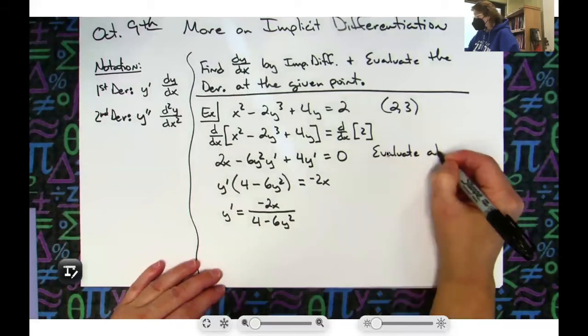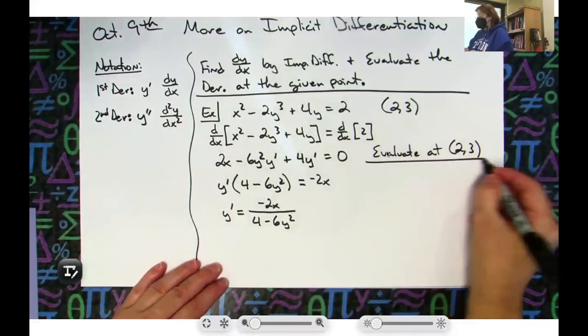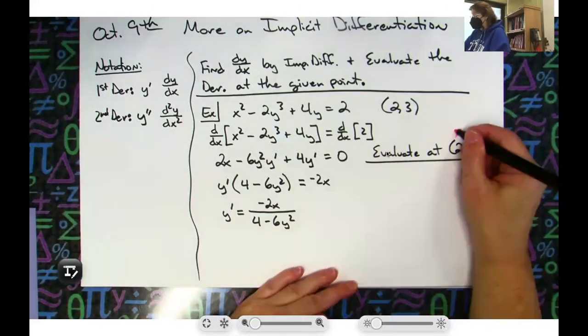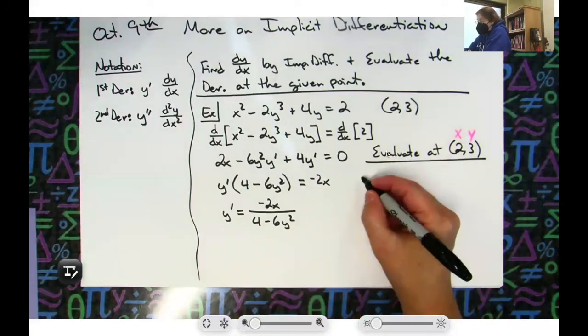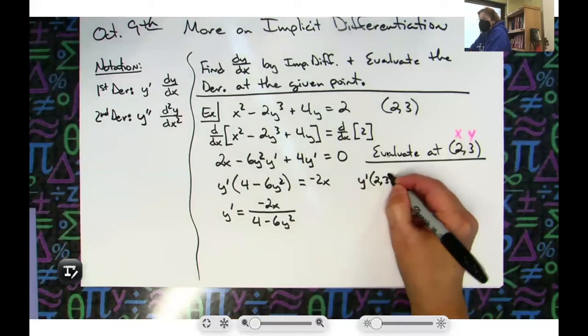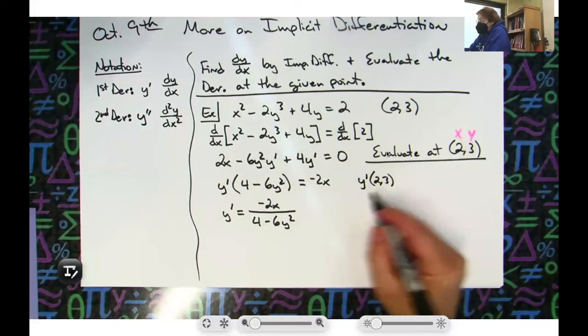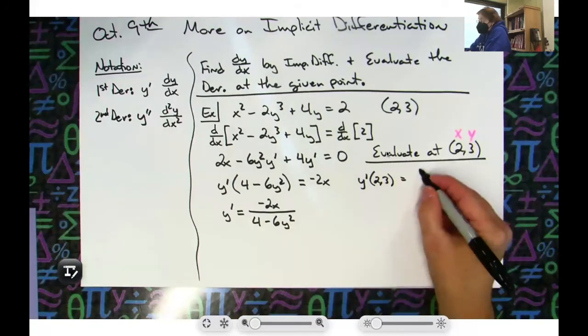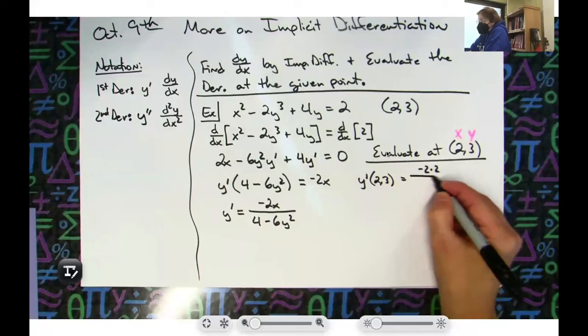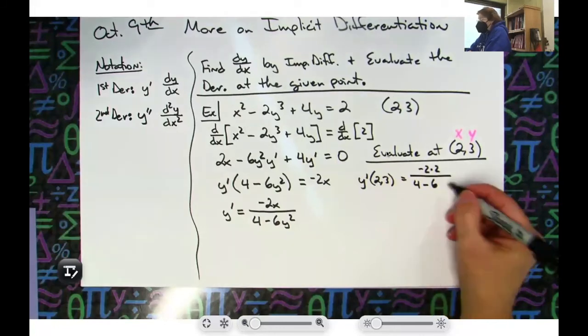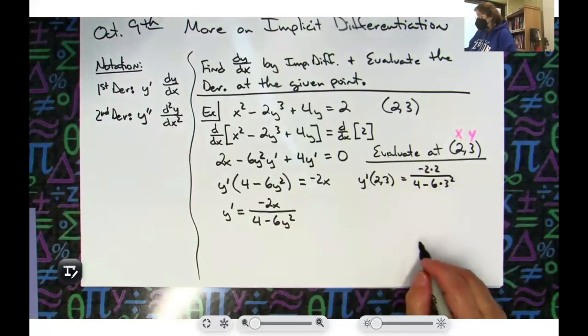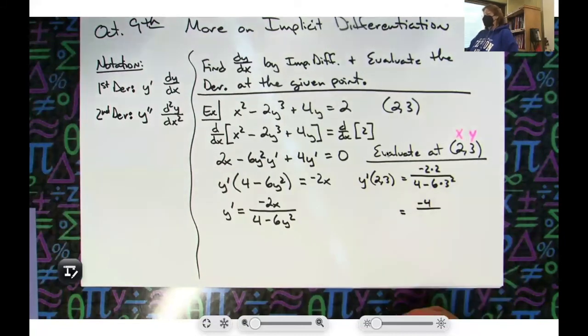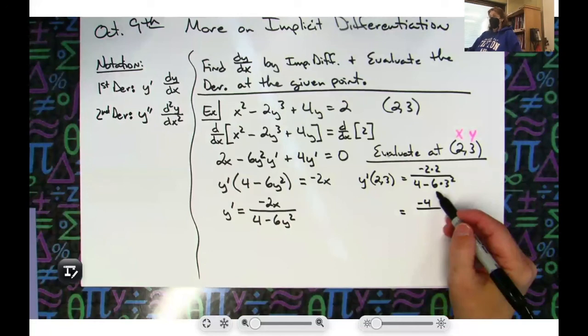When I do that, obviously the 2 is my x coordinate, the 3 is my y coordinate, we know that. So telling the person what you're doing, you need to write that y prime at (2,3) - that's telling you hey I'm taking this point, I'm plugging that into this derivative. Don't let me make an arithmetic mistake - negative 2 times 2 on top, 4 minus 6 times y squared, 3 squared, that'd be a 9 right. So I'm going to have like negative 4 - well that's just going to be really big, 9 times 6 is 54. 4 minus 54, so negative 50, and a negative over negative is positive.